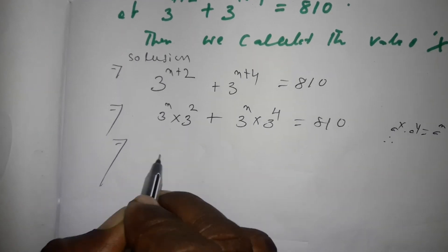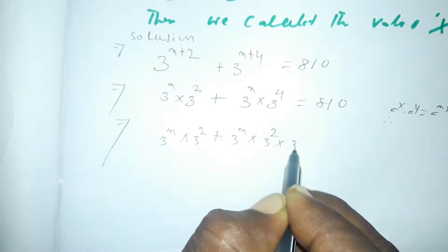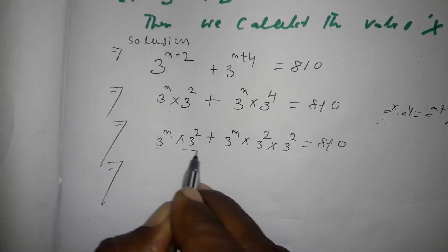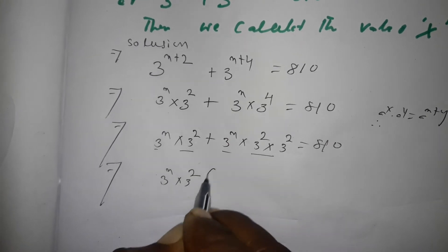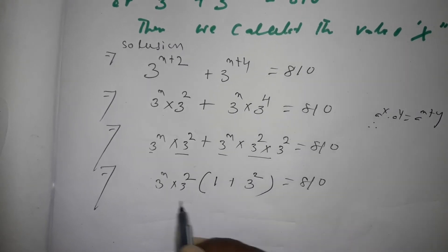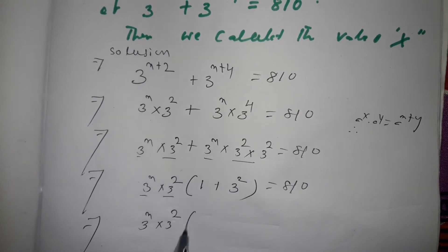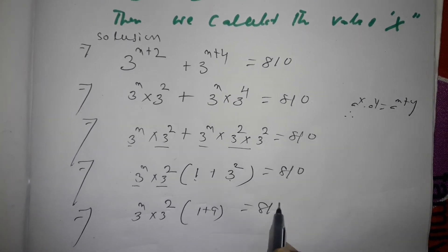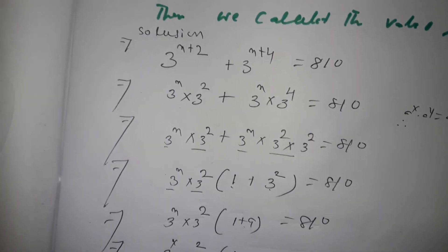This implies that 3 to the power x into 3 to the power 2, plus 3 to the power x into 3 to the power 4, equals 810. Now 3 to the power x is taken common from both terms, giving 3 to the power x into 3 to the power 2, multiplied by the bracket 1 plus 3 to the power 2, equals 810.